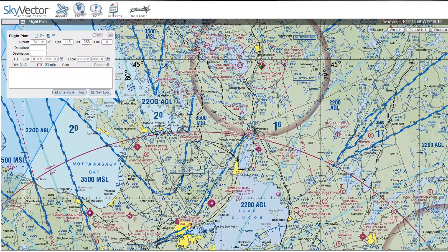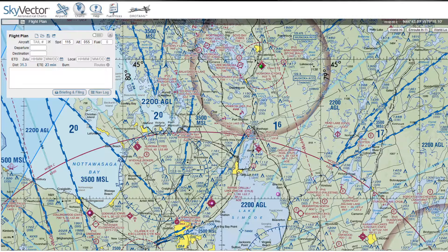Welcome aboard everybody. Today we're going to be doing a flight from Muskoka to Lake Simcoe Regional Airport. It's a flight that I haven't personally done, but let's go ahead and get right into it. I'm basically just going to show you how to do a basic flight plan — how to get from point A to point B.